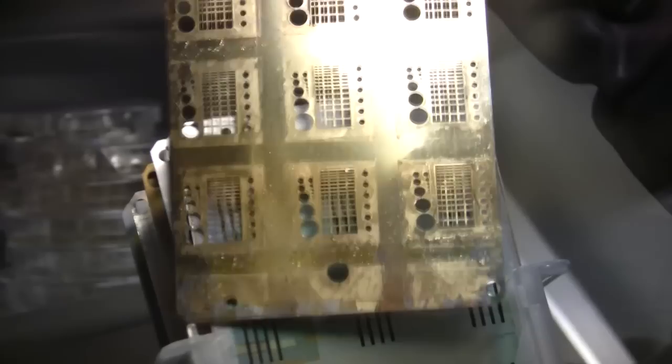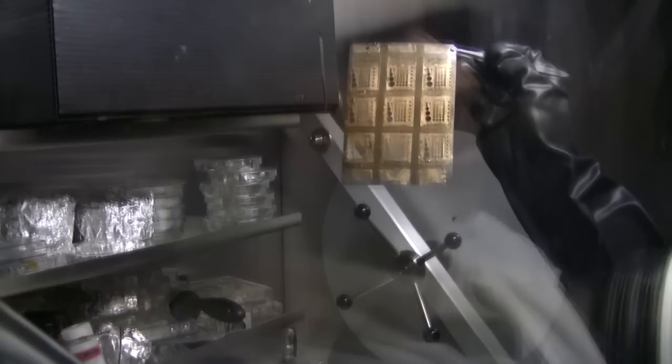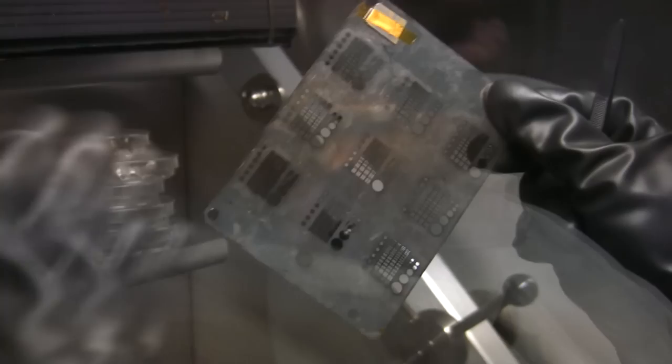We have some mask holders where we put our mask which is used for top source-drain electrode depositions. The first one is mask for transistors. So on one mask we can do nine different substrates. So this is the metal film. We have openings where the metal goes through in the evaporation system and it gets deposited on the substrate. I will put this metal mask on a substrate mask holder.